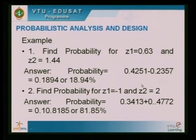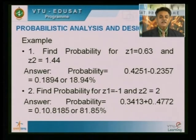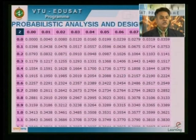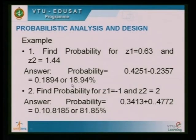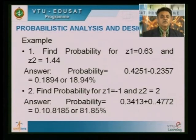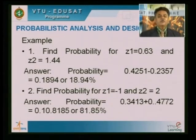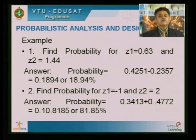Here is an example: find the probability — the area under the curve — for z1 = 0.63 and z2 = 1.44. For z1 = 0.63, the table gives 0.2357. For z2 = 1.44, the value is 0.4251. Deducting: 0.4251 − 0.2357 = 0.1894. So the probability between these two ranges is 18.94 percent.